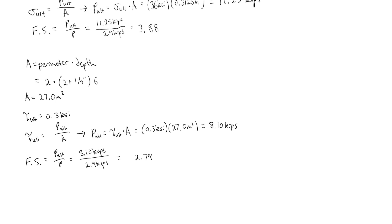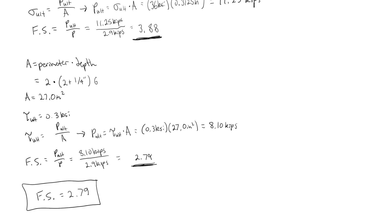We now have two factors of safety: 3.88 for the hole and 2.79 for shearing. This system is going to fail at the lowest factor of safety, so we choose 2.79 as our final answer.